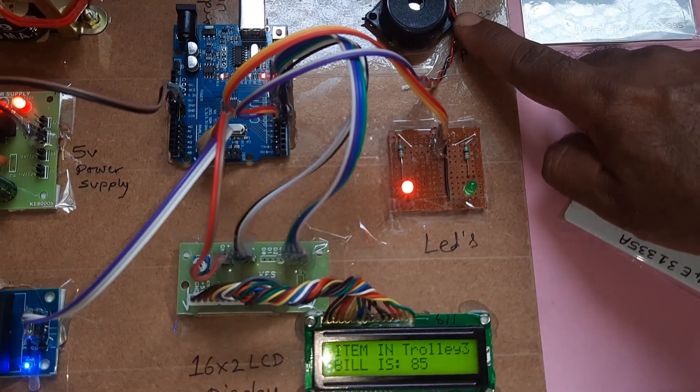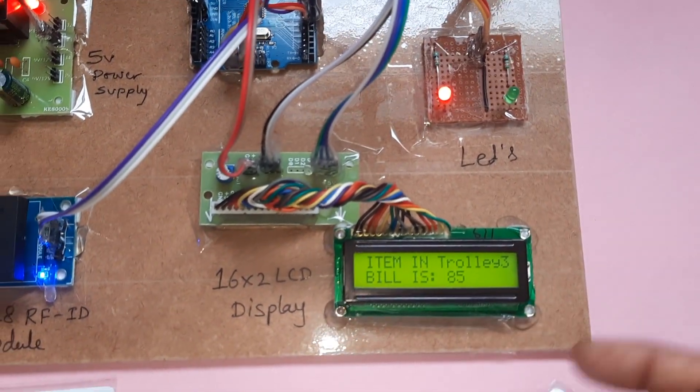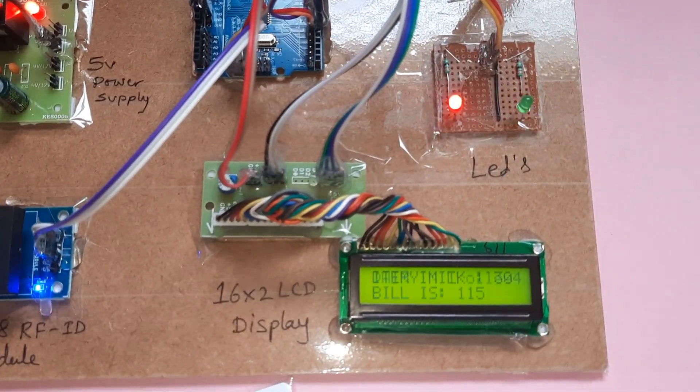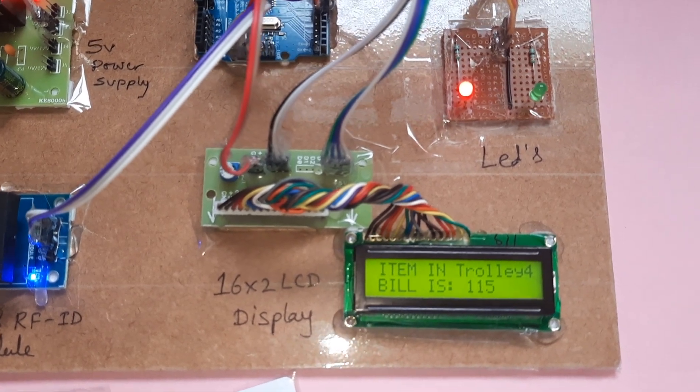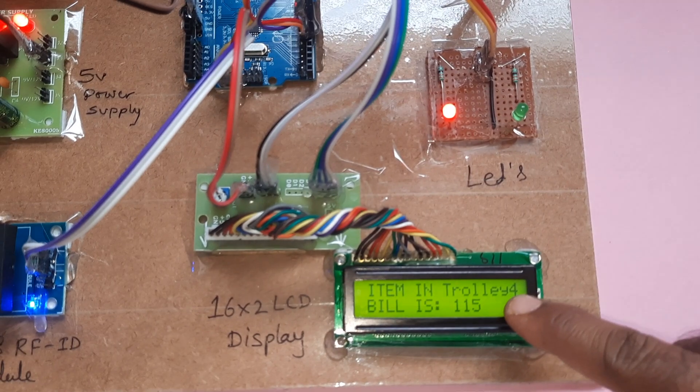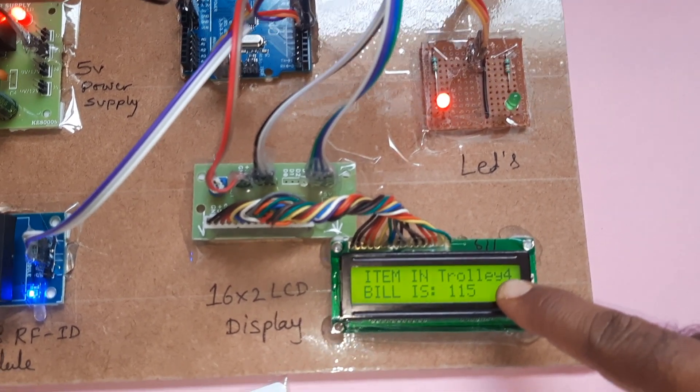Green LED and alarm. Three items added and the fourth item. Four items, 115 cost. It is showing item in trolley is four, bill is 115.